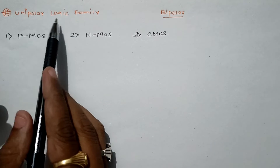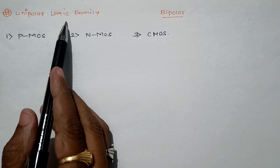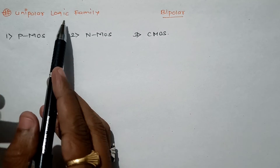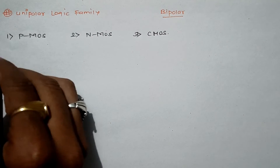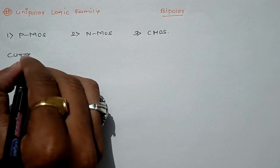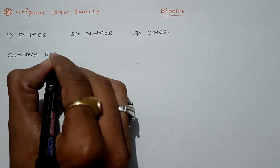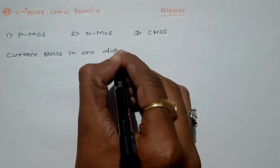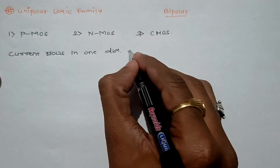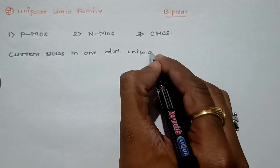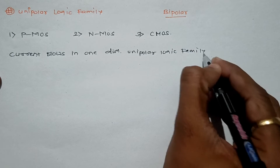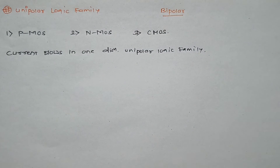First we define what is meant by unipolar logic family. These are the logic families in which current conduction — current flows only in one direction. So all the logic families in which current flows in one direction, or due to majority charge carriers, are called unipolar logic families.